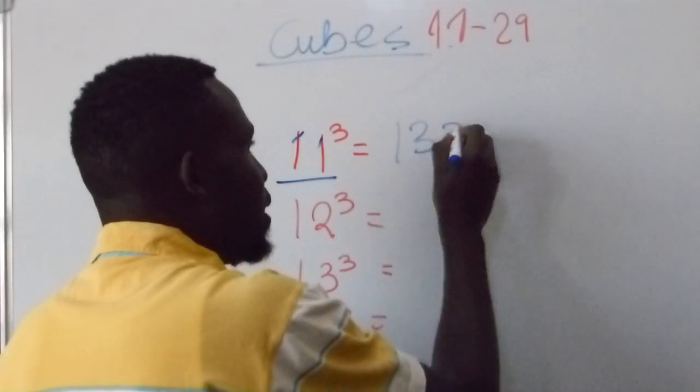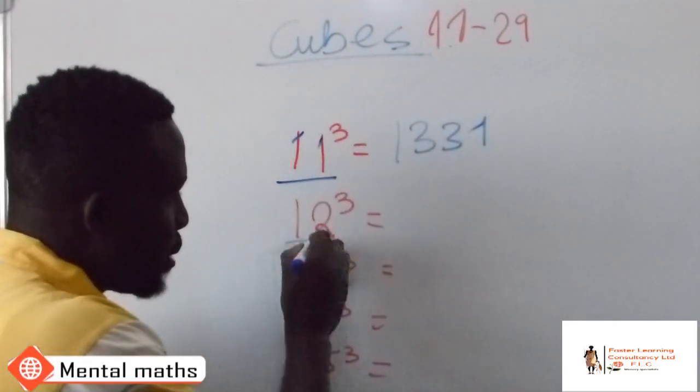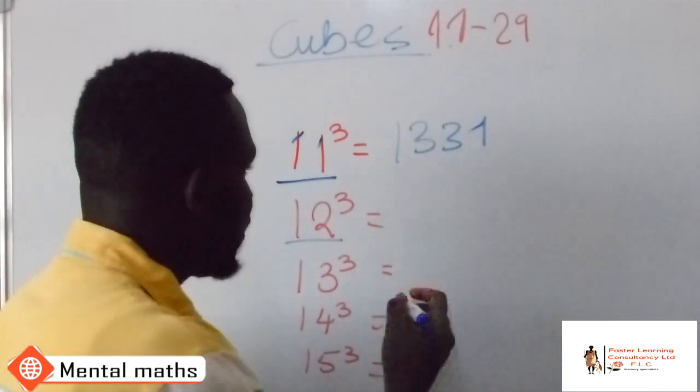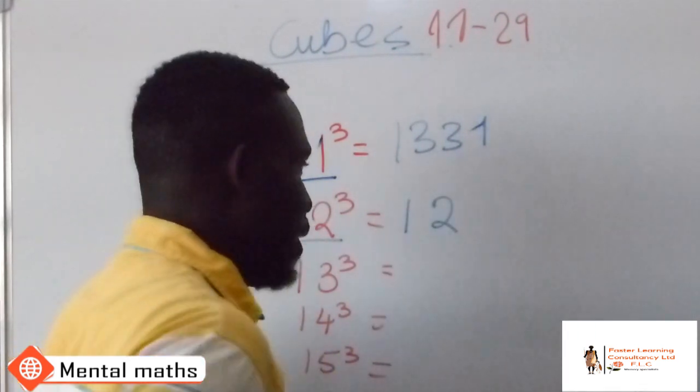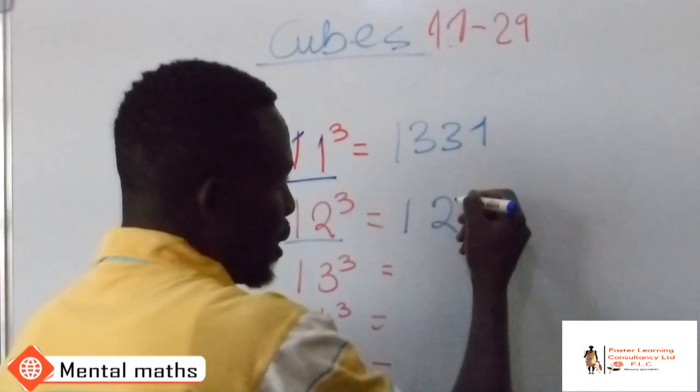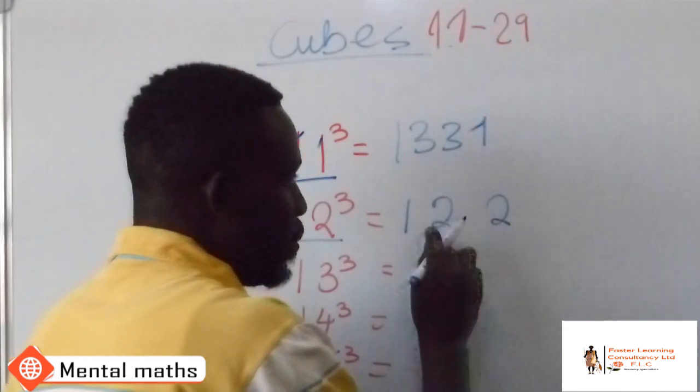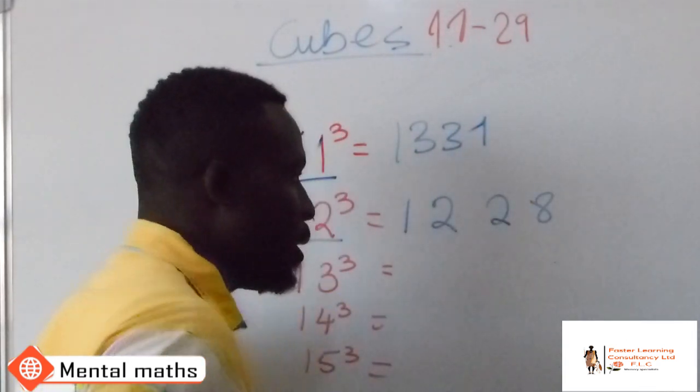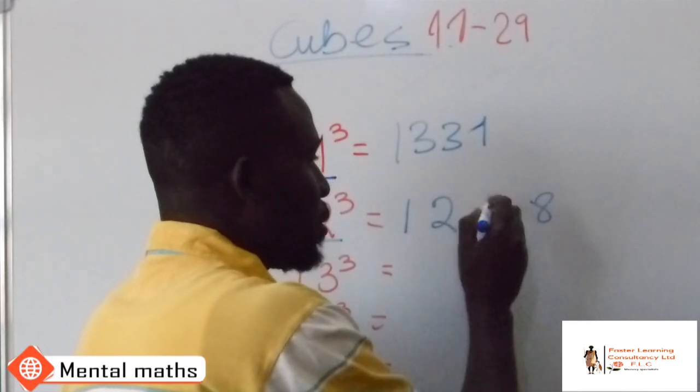Here we have 1331. Suppose now you want to work on what is 12 cubed. So for 12 cubed, you are going to repeat 12. The next thing you are going to do, you are going to now square 2, so you have 4, and then cube 2, which is 8.